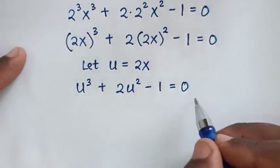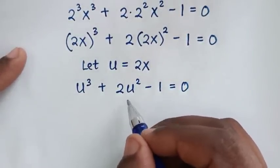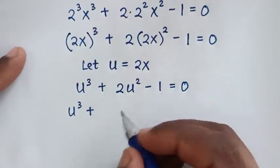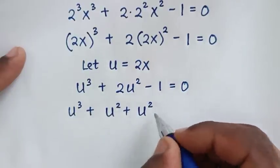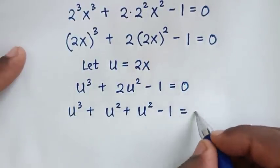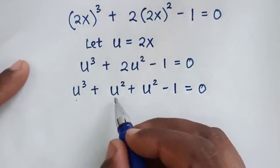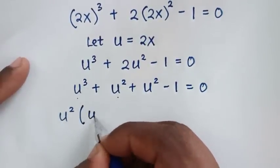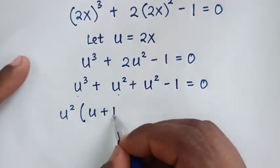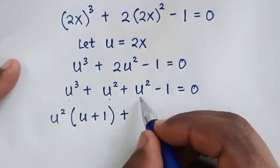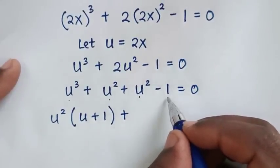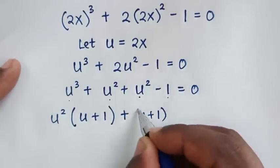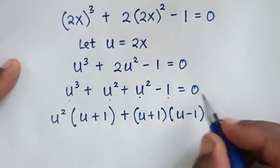We solve this cubic equation by grouping and factorization. We rewrite 2u² as u² + u², giving u³ + u² + u² - 1 = 0. From the first two terms, u² is common, so we factor out u² to get u²(u + 1). Then u² - 1 is a difference of squares, which factors as (u + 1)(u - 1). So we have u²(u + 1) + (u + 1)(u - 1) = 0.